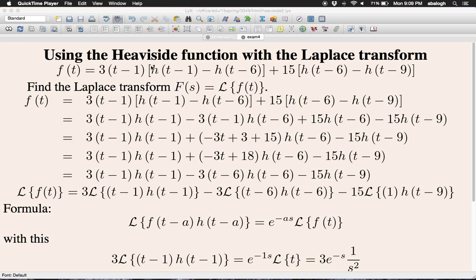We multiply through these brackets and do some simplification. Let's see what we can do with it. We combine the h of t minus 6 part. We have minus 3 times t minus 1 and plus 15.